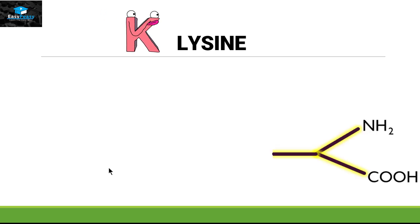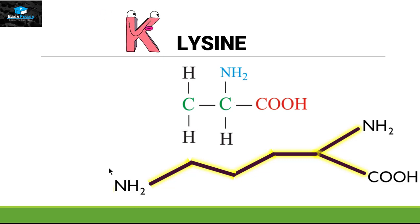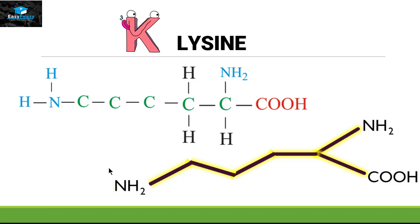The next amino acid is lysine — symbol K. To memorize the structure, we use the fork and attach three carbons like a wave, then attach an amino group at the end. To make the official structure, we attach three more carbon atoms to the fork. The third carbon is attached to one nitrogen, and since nitrogen makes three bonds, two bonds are made with two hydrogens. All carbons are stabilized with two hydrogens each. This is the official structure for lysine.